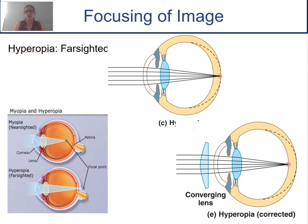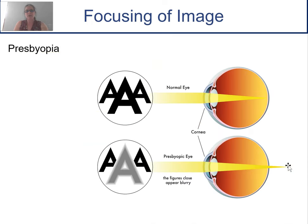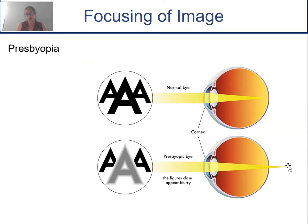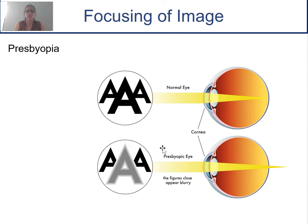Farsighted, or hyperopia, means you can see far away really well but can't see things up close. The eyeball is a little shortened, and the image focuses behind the fovea. A different type of lens moves that focal point so it lands right on the fovea, correcting your vision. Nearsightedness is probably a lot more common than farsightedness and tends to be genetic. Presbyopia is why I wear readers — as we get older, the lens loses the ability to accommodate and bend, making things within arm's distance look blurry. You use reading glasses to help with that.